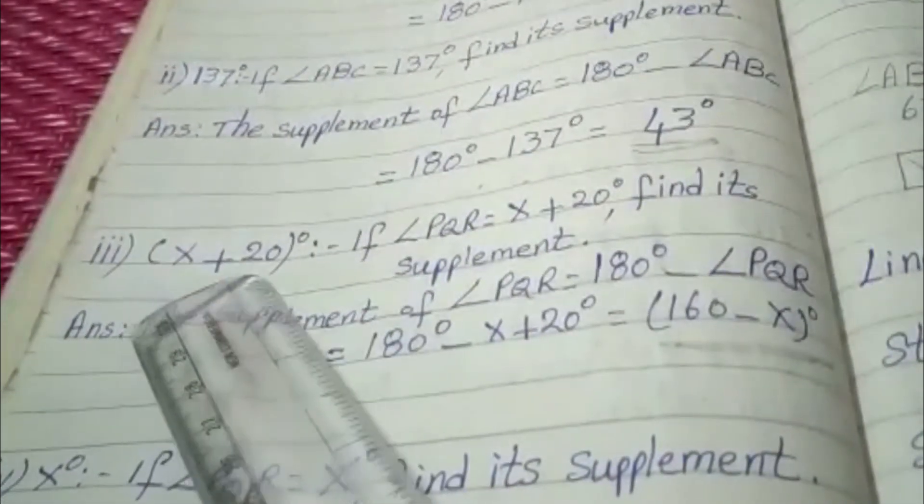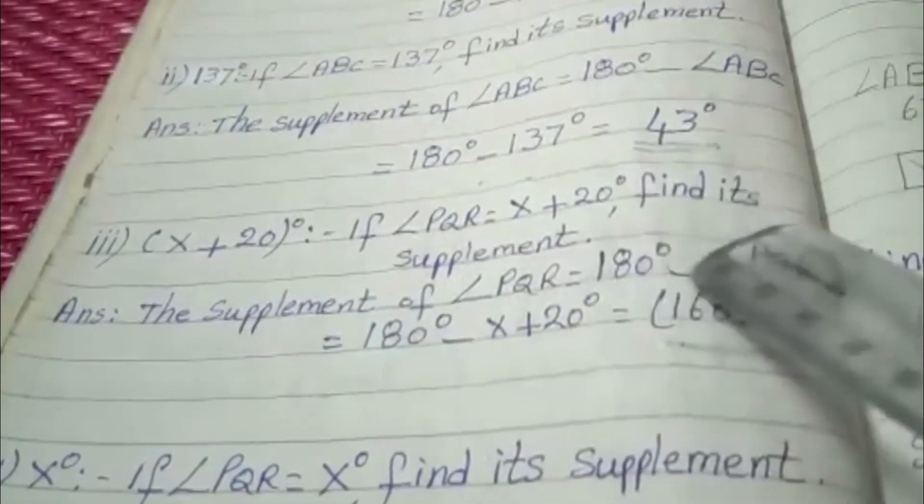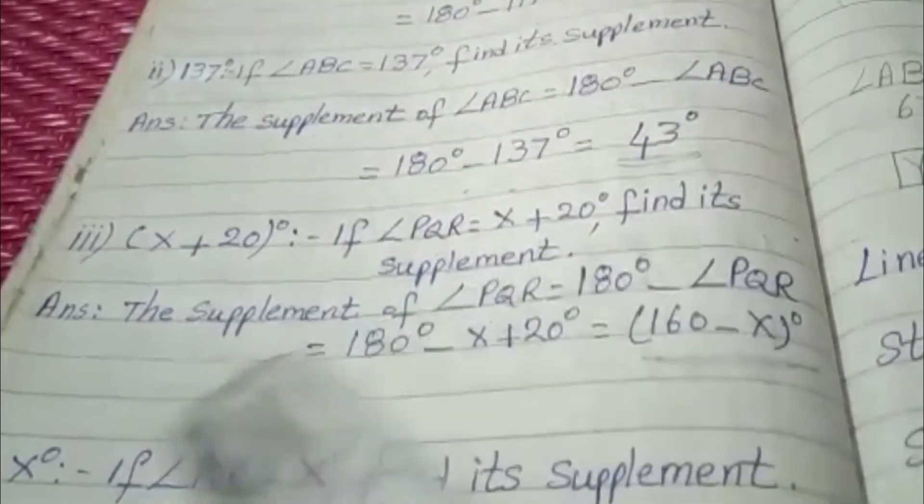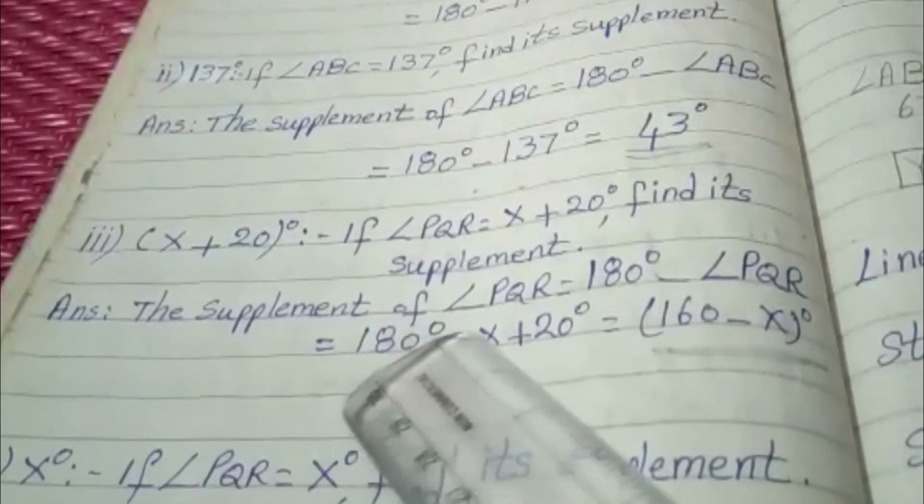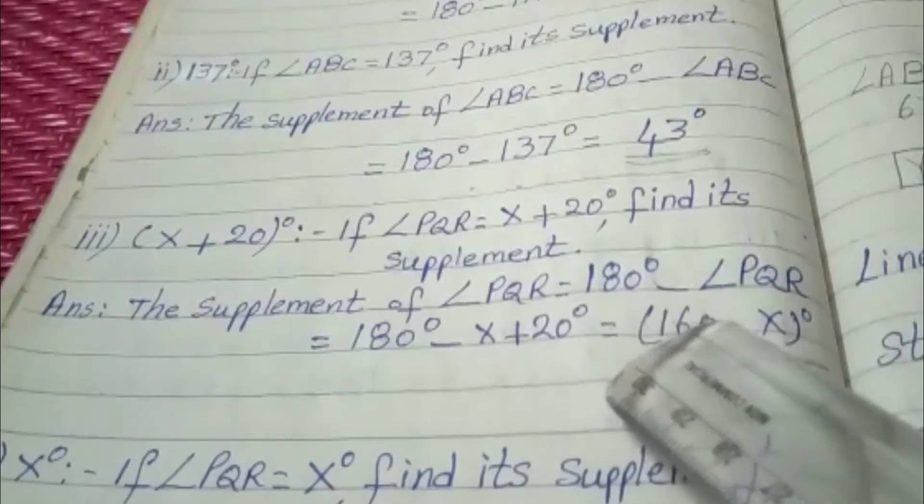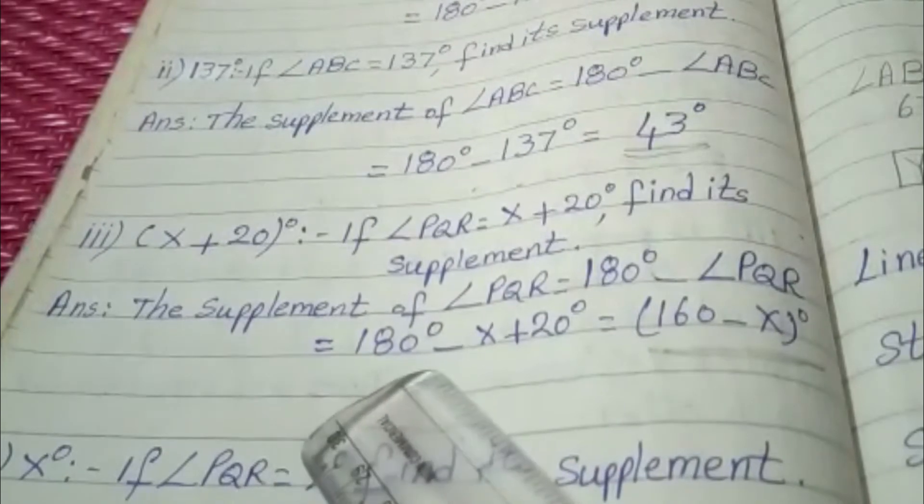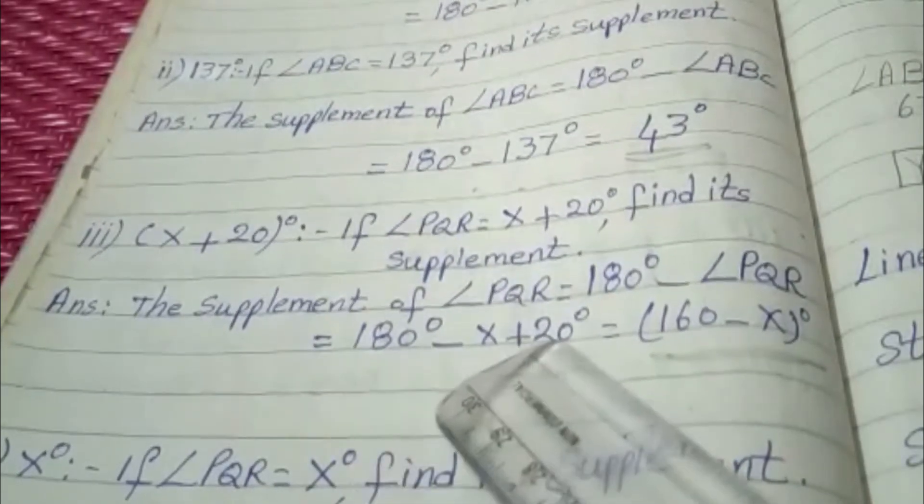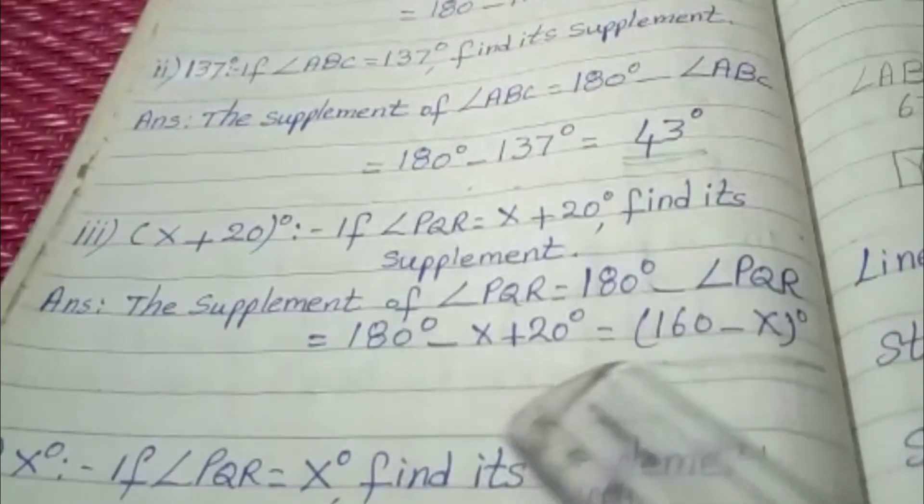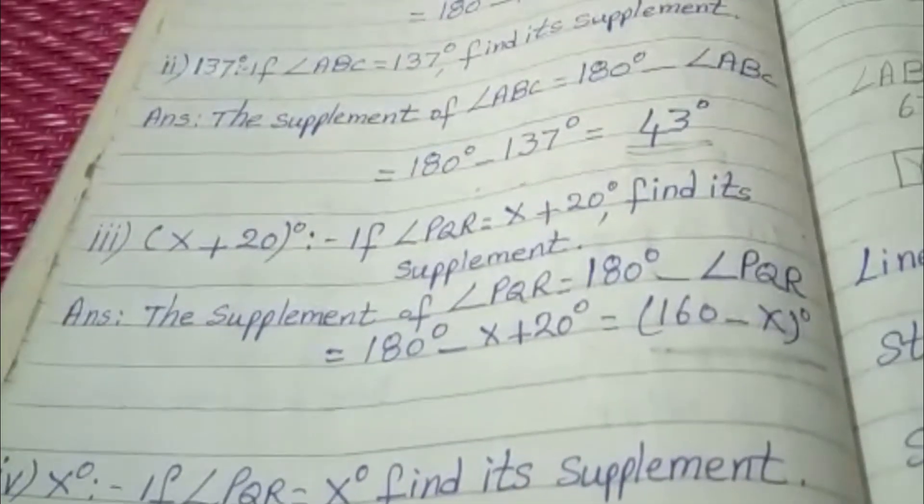X plus 20 degrees: if angle PQR is equal to X plus 20 degrees, find its supplement. Answer: The supplement of angle PQR is equal to 180 degrees minus angle PQR is equal to 180 degrees minus X plus 20 degrees. That is equal to 160 minus X degrees is the answer. Fourth question.